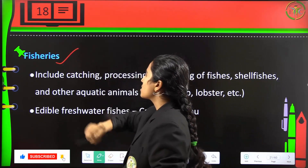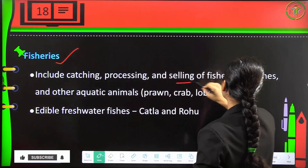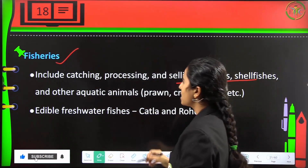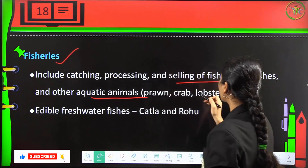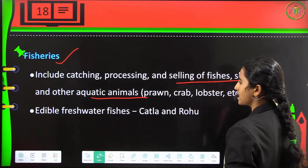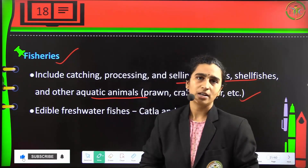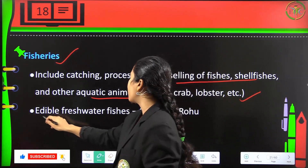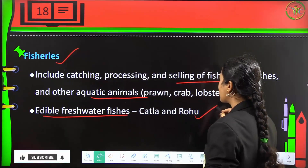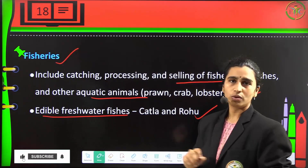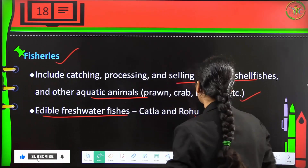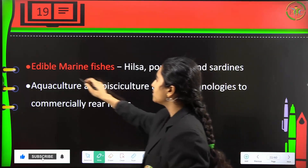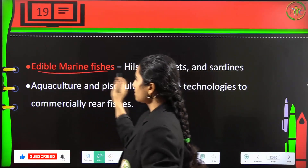Fisheries includes the catching, processing and selling of fishes, shellfishes and other aquatic animals like prawns, crabs, lobsters, etc. Edible freshwater fishes include katla and rohu, which are the most commonly consumed fishes.